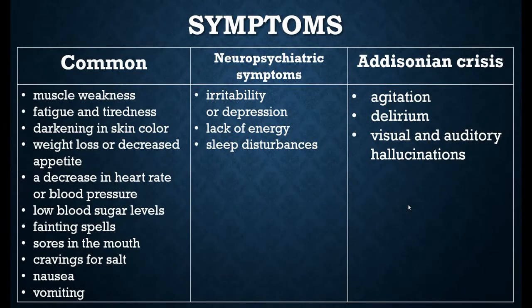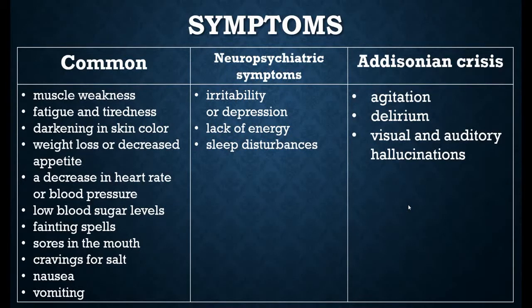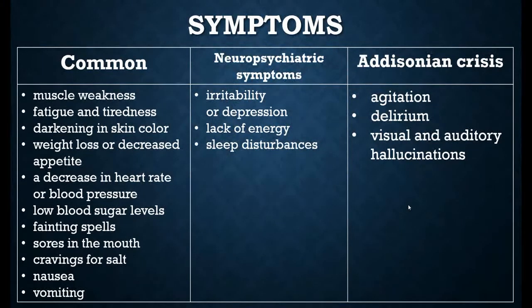The common symptoms of Addison's disease include weakness of the muscles, tiredness, and fatigue. You will have dark skin pigmentation on your body. You may lose weight and there will be decreased appetite, as well as a decrease in heart rate or blood pressure, low blood sugar levels, and cravings for salt.